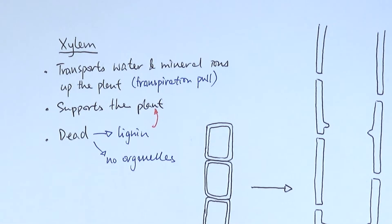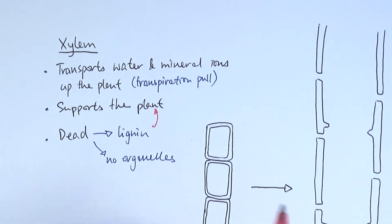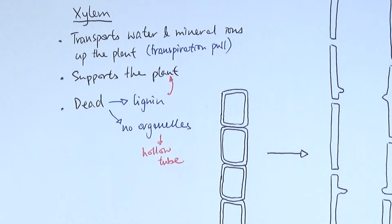The xylem itself is actually dead so that lignin can be deposited in it, and also it will not have any organelles within the tube, making it a hollow tube. The transfer of water will not be hindered by any other object inside it, so it's about having that smooth flow of water.